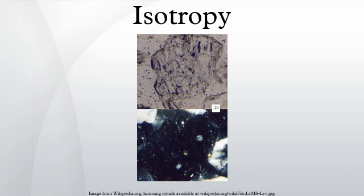An isotropic antenna is an idealized radiating element used as a reference — an antenna that broadcasts power equally in all directions. The gain of an arbitrary antenna is usually reported in decibels relative to an isotropic antenna, and is expressed as dBi (decibel isotropic).